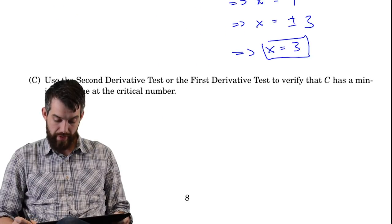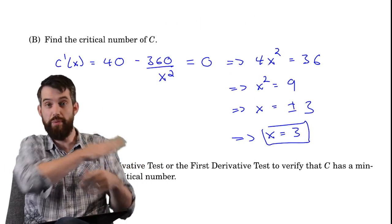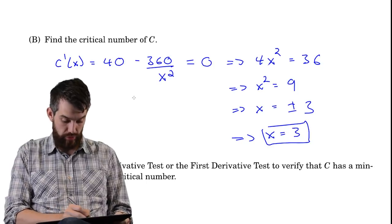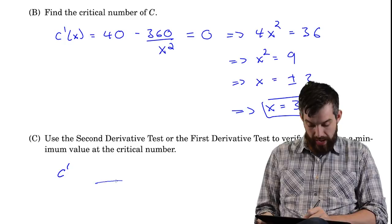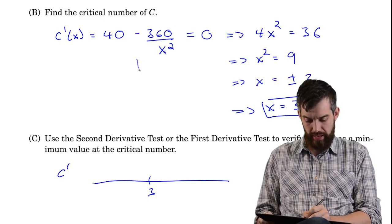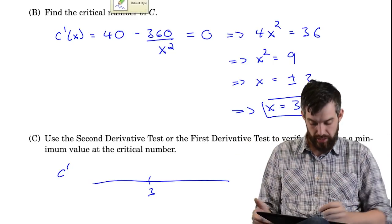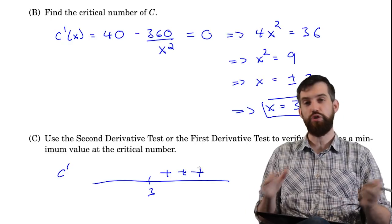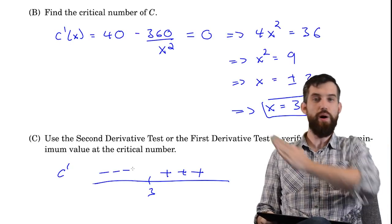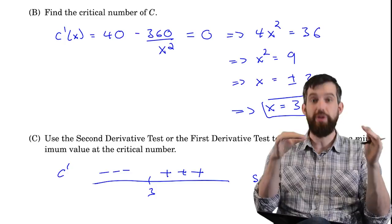To verify this is a minimum using the first derivative test: when x is less than 3, the −360/x² term dominates, making C′ negative. When x is greater than 3, C′ is positive. So the derivative goes from negative to positive at x = 3, confirming a minimum. Given this constrained volume, we've minimized the cost.